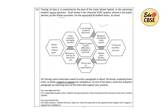Now, what we have to do — all Sering's peers have been asked to write a paragraph in about 120 words, analysing these traits to either support or oppose her candidature. So looking at these traits, you have to write whether you would like to vote for her or you would not vote for her. As one of her peers, write this analytical paragraph by selecting some of the traits that support your analysis.